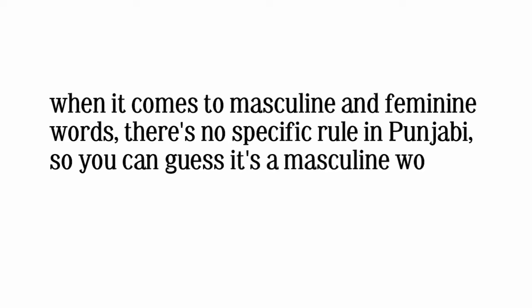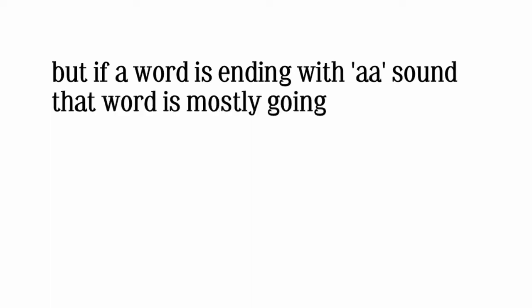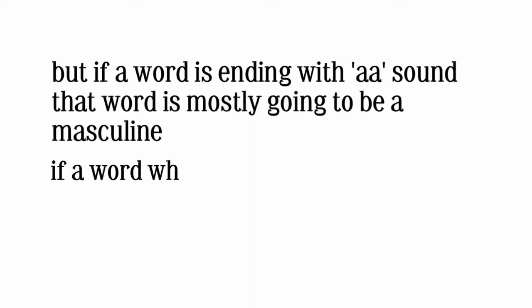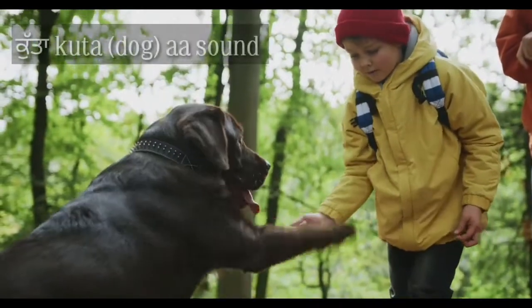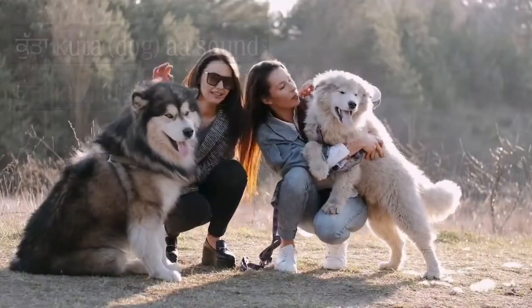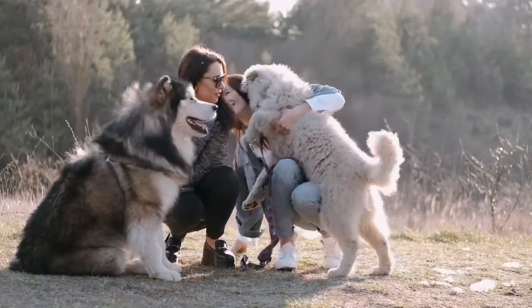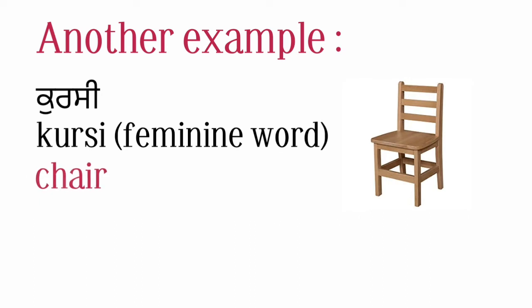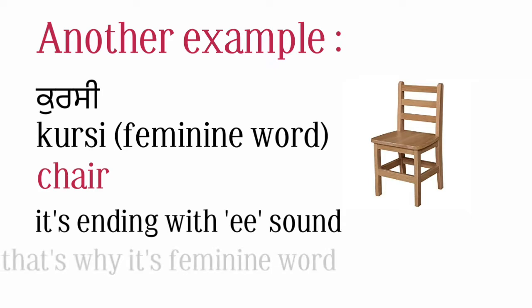When it comes to masculine or feminine words, there are no specific rules in Punjabi. But if a word is ending with an 'a' sound, that word is mostly going to be masculine. If a word is ending with an 'i/e' sound, that word is going to be feminine. For example: 'kutta' means dog — it ends with 'a', so it's masculine. 'Kutti' means female dog — it ends with 'i', so it's feminine. Another example: 'kursi' means chair — it ends with 'i', so it's feminine.